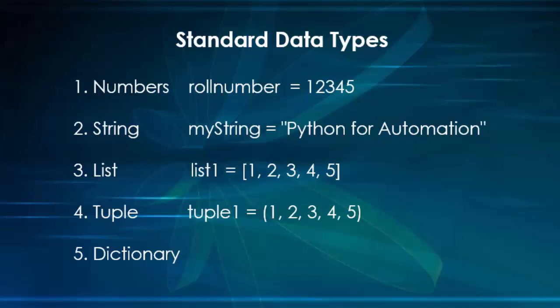Till now we have completed four data types: numbers, string, list, and tuple. We know number is used to store integer values, float, and complex numbers. String is used to store single characters or groups of words. Lists and tuples are used to store multiple values of different data types in a single variable. The only difference is lists are mutable and tuples are immutable.